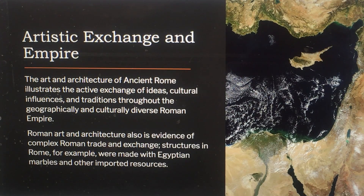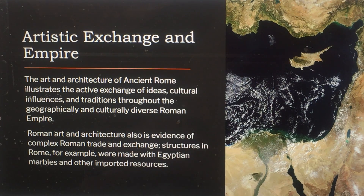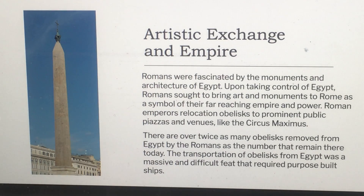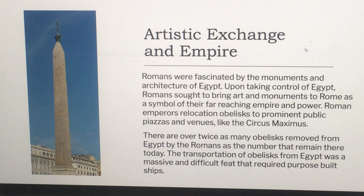The art and architecture of ancient Rome illustrates the active exchange of ideas, cultural influence, and traditions throughout the geographically and culturally diverse Roman Empire. Roman art and architecture is also evidence of complex trade and exchange structures — for example, structures in Rome were made with Egyptian marbles and other imported resources. Romans were fascinated by Egyptian monuments and, upon taking control of Egypt, sought to bring art and monuments to Rome as symbols of their far-reaching power, relocating obelisks to prominent public piazzas and venues like the Circus Maximus. There are over twice as many obelisks removed from Egypt by the Romans as remain there today, and transporting them required purpose-built ships.